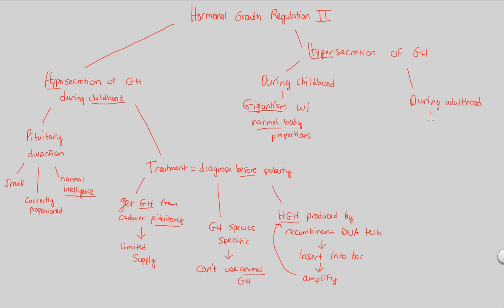During adulthood, you can actually get a different thing. If you're an adult that's secreting too much growth hormone, you're going to get acromegaly. Acromegaly is defined as the abnormal growth in body parts.